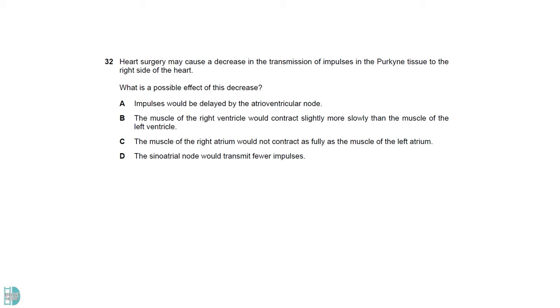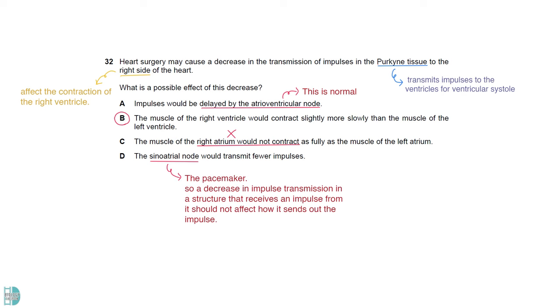Purkinje tissue transmits impulses to the ventricles for ventricular systole. So a decrease in the transmission to the right side would affect the contraction of the right ventricle. A is not correct as the delay of impulse by AVN is a normal event that must occur. C is not true as the Purkinje tissue does not cause the atrial systole. SAN is the pacemaker. So a decrease in impulse transmission in a structure that receives an impulse from it should not affect how it sends out the impulse.